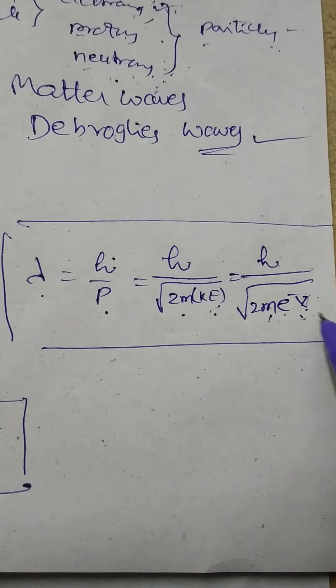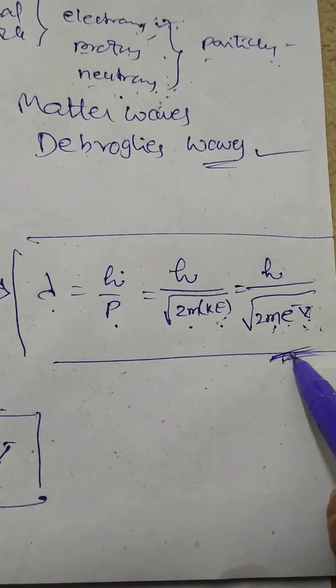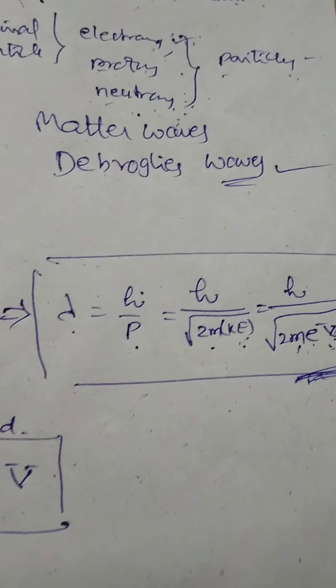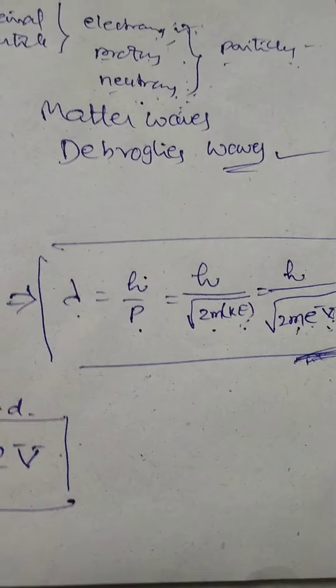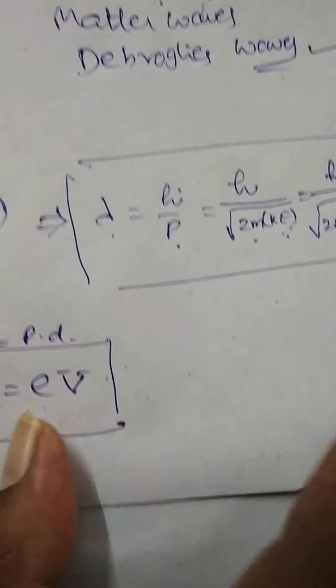Lambda is equal to h by root of p, m into e, b. These are the different formulas corresponding to de Broglie's wavelength.